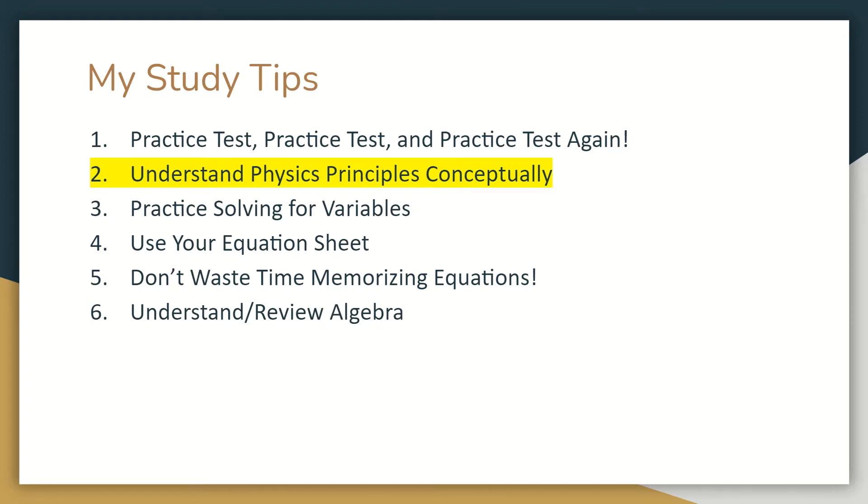Make sure you understand and review algebra because you need to know algebra in order to solve for variables. Next, make sure you're taking practice multiple choice exams. Practice multiple choice exams are helpful in AP Physics 1 because they can test things conceptually and numerically. If you're not able to answer multiple choice questions, you're going to have to really ace that free response section. You don't want to rely too heavily on one part of the exam, so keep that balance.